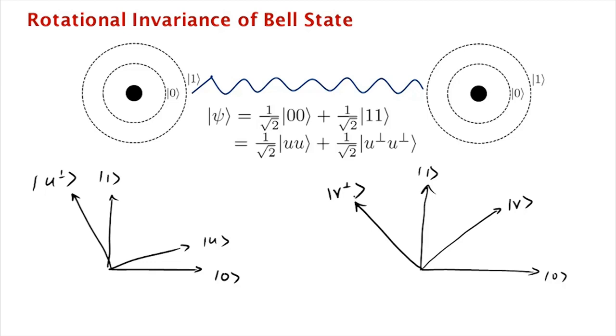What we want to know is if we measure the first qubit in the u, u perp basis and measure the second qubit in the v, v perp basis, what's the chance that we get matching outcomes? That if we see the outcome of the first measurement to be u, what's the chance that we get v as the outcome of the second measurement?